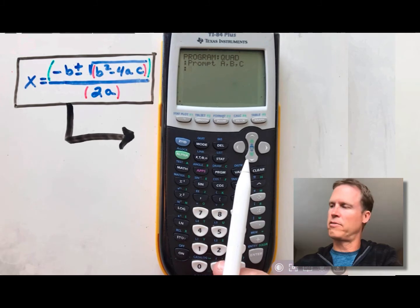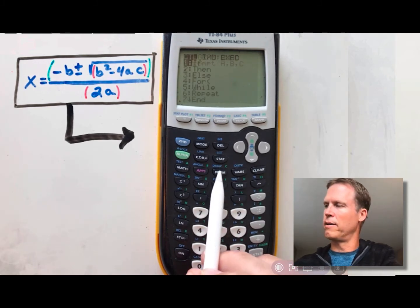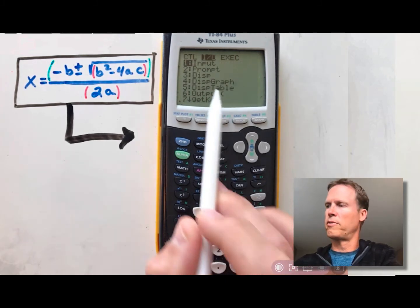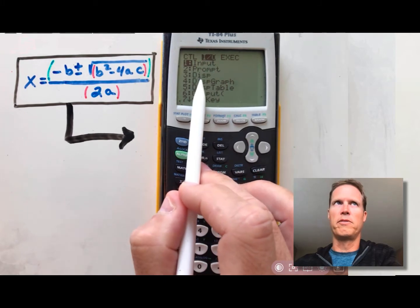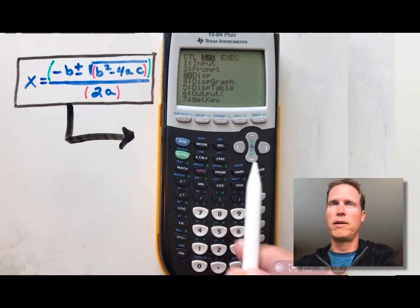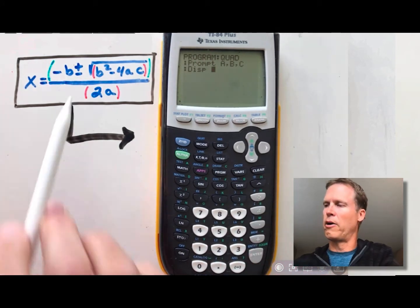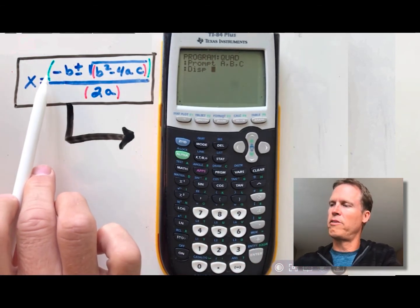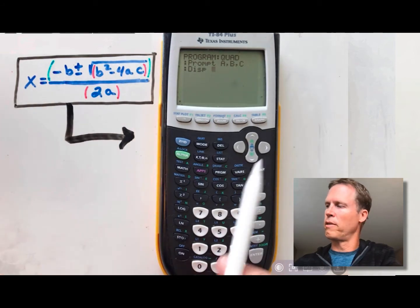Next, I want to display my first answer, so then I just choose the program button again. Hit the right arrow, and you'll notice it's on I-O again, and you want to choose the option for display. That's option number 3. So press the down arrow twice, press enter, and now you've got your first calculation started. We're going to put in the parentheses for the whole entire numerator first.